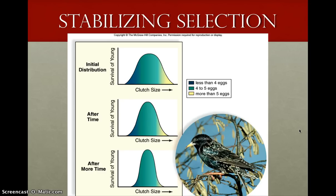The first one is stabilizing selection. Stabilizing selection is when an intermediate phenotype improves adaptation to the environment, so extreme phenotypes are selected against and intermediates are favored. The example here is the Swiss starling. They lay four or five eggs, and this is the most adaptive. If they lay less than four eggs, the chances of having the most offspring survive are fewer. And if they lay more than five eggs, their offspring are less likely to survive.